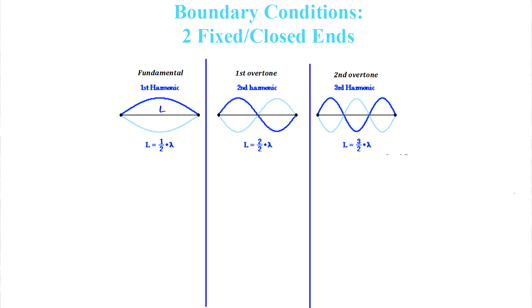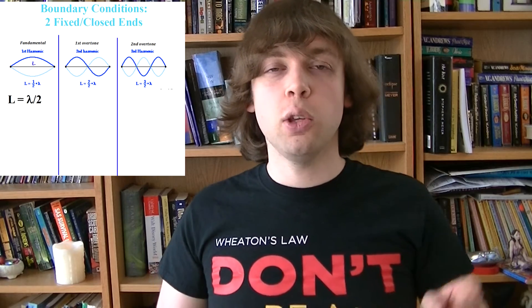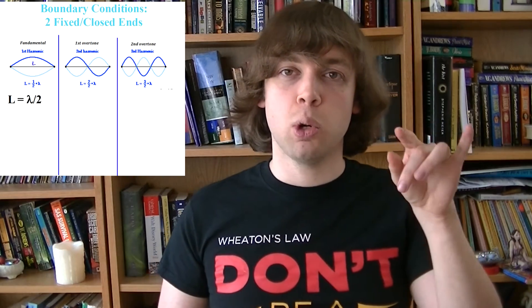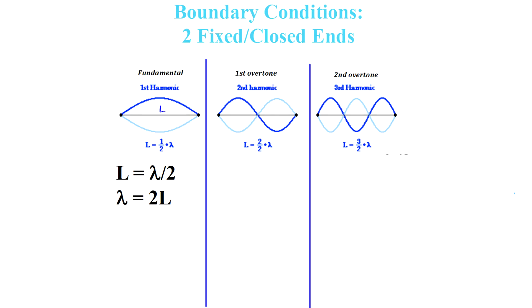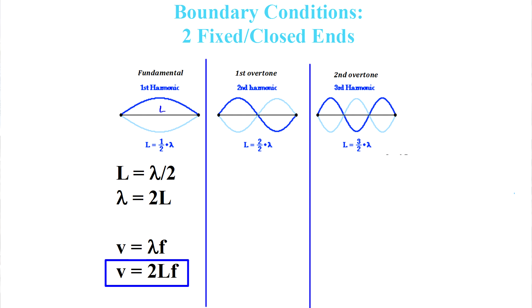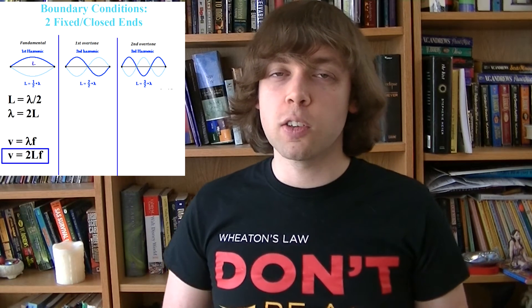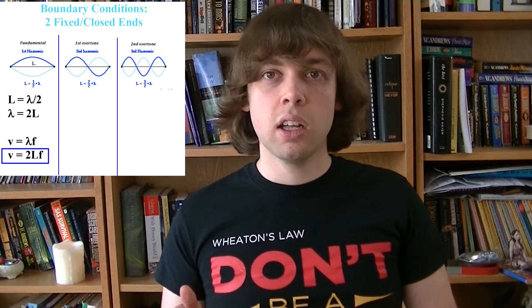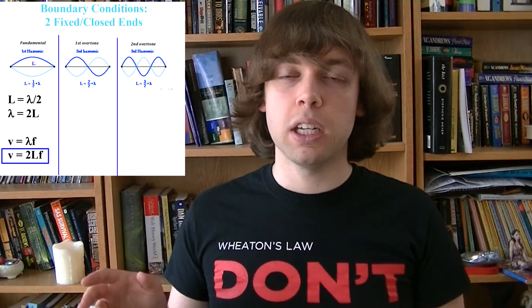We can use these drawings to derive helpful equations for each of the harmonics. Going back to the guitar, the first harmonic pattern is half a wavelength, so the length L of the string is equal to half a wavelength. If you doubled the length of the string you'd get back to another peak, so a full wavelength requires two lengths L, meaning L equals lambda over 2. We also know that wave speed equals wavelength multiplied by frequency. Substituting in, we get V equals 2LF. This equation works for the fundamental frequency of a guitar string — given length L and wave speed V, you can find the frequency F of the sound produced.